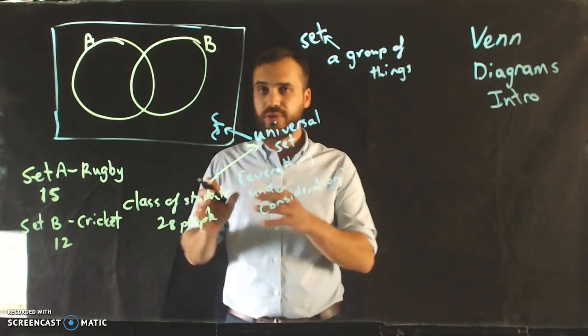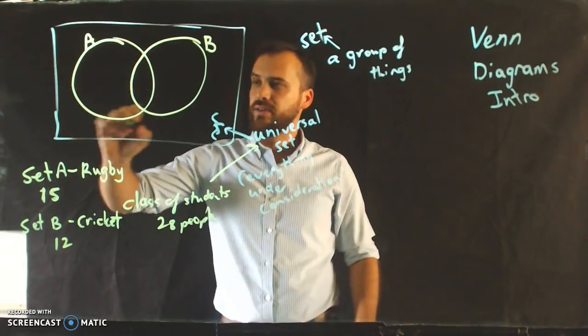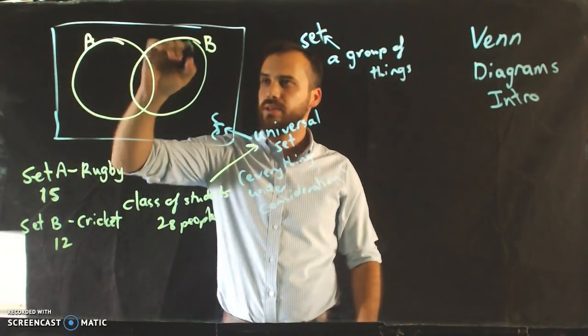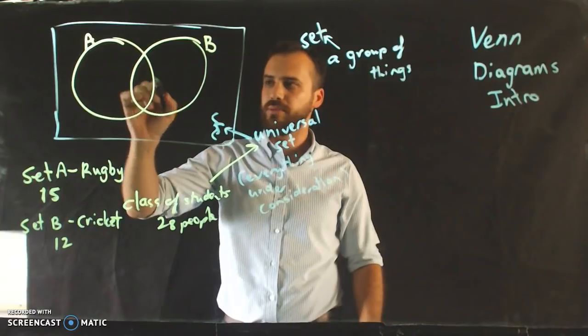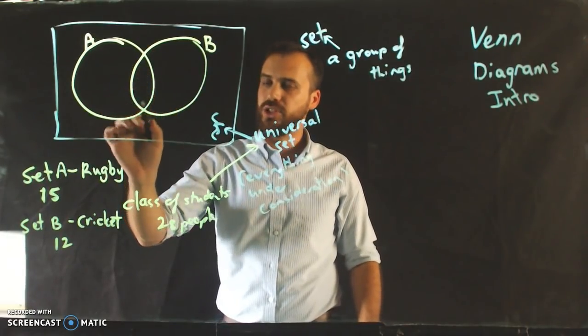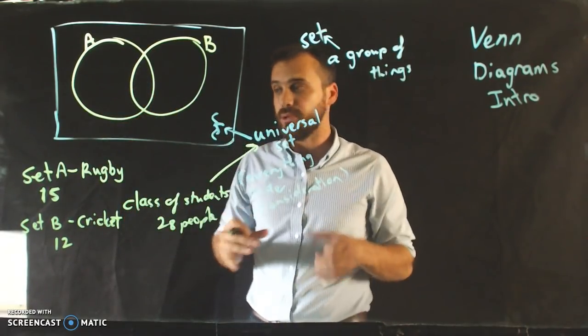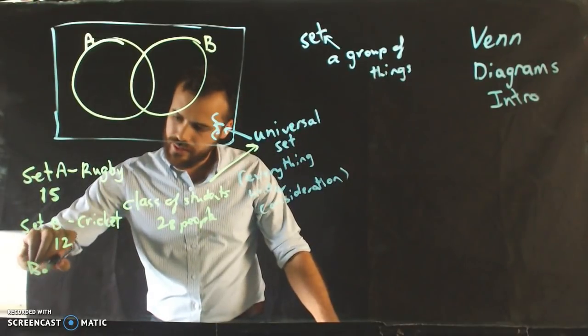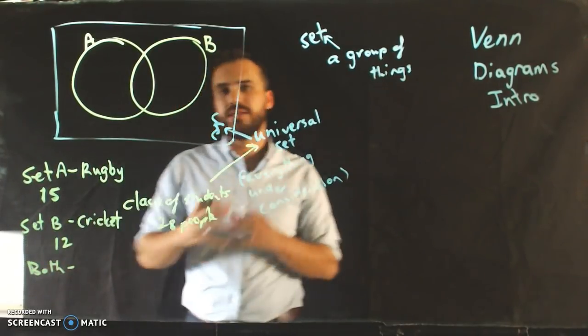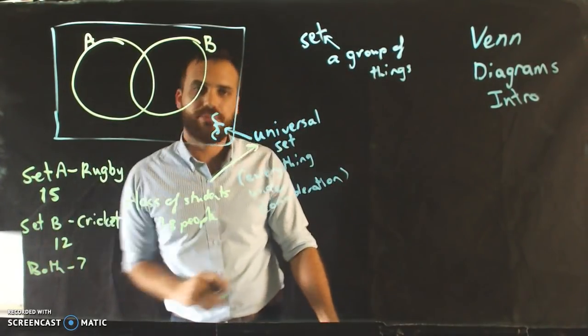And hopefully you can see that this is set A, 15 people play rugby. This is set B, 12 people play cricket. And there's this nice little section in here. And that's the people that play both. So let's say that in this particular class, 7 people play both.